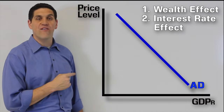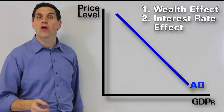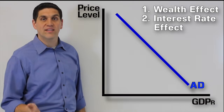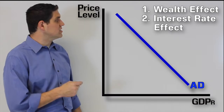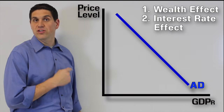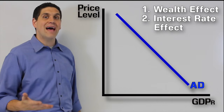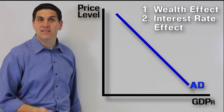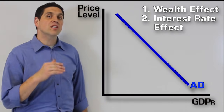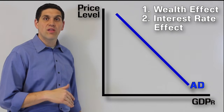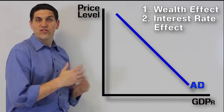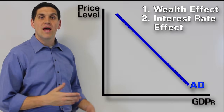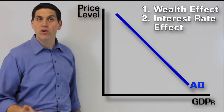One is called the wealth effect, and the other is called the interest rate effect. The wealth effect says that when the price level goes up and there's inflation, the value of people's assets decrease, and so they buy less stuff. When price level goes down, their money goes further, and they have more purchasing power, and so they'll go buy more stuff.